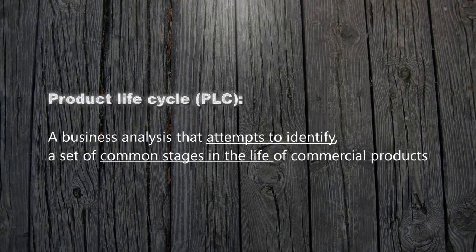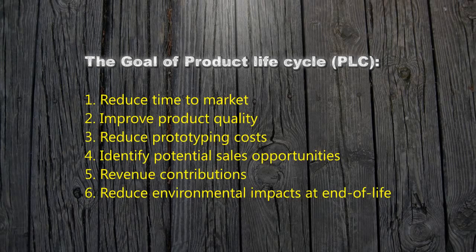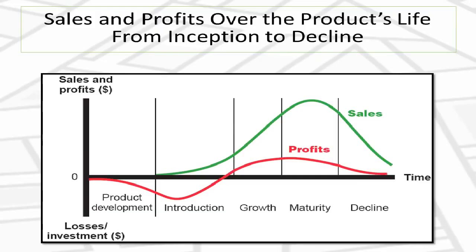Next, we would like to discuss the product life cycle, the PLC. PLC is a business analysis that attempts to identify a set of common stages in the life of commercial products. The goals of PLC are to reduce time to market, improve product quality, reduce prototyping costs, identify potential sales opportunities and revenue contributions, and reduce environmental impacts at end of life. The product life cycle has four clearly defined stages, each with its own characteristics that mean different things for businesses trying to manage the life cycle of their particular products.